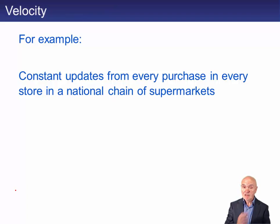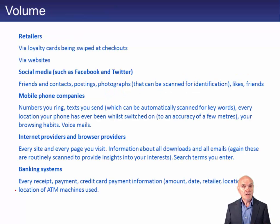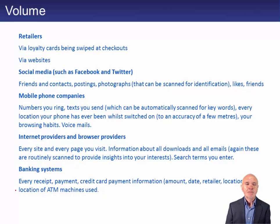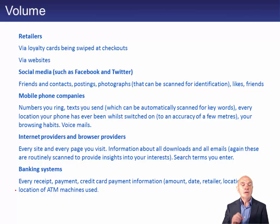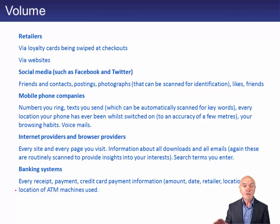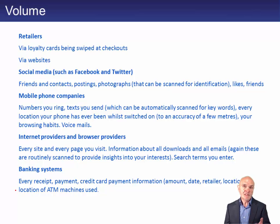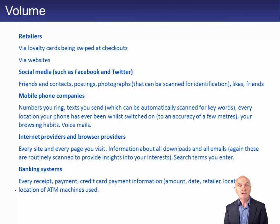Velocity: here we have constant updates from every purchase. The volume of data — retailers keep loyalty cards swiped at a checkout. Websites: they know every page you've visited, like the Sting song, every click you make, are they watching you? Even if you don't buy something they can register an interest. They know what adverts you have gone on to, and they know the next website you're probably going to visit as well.